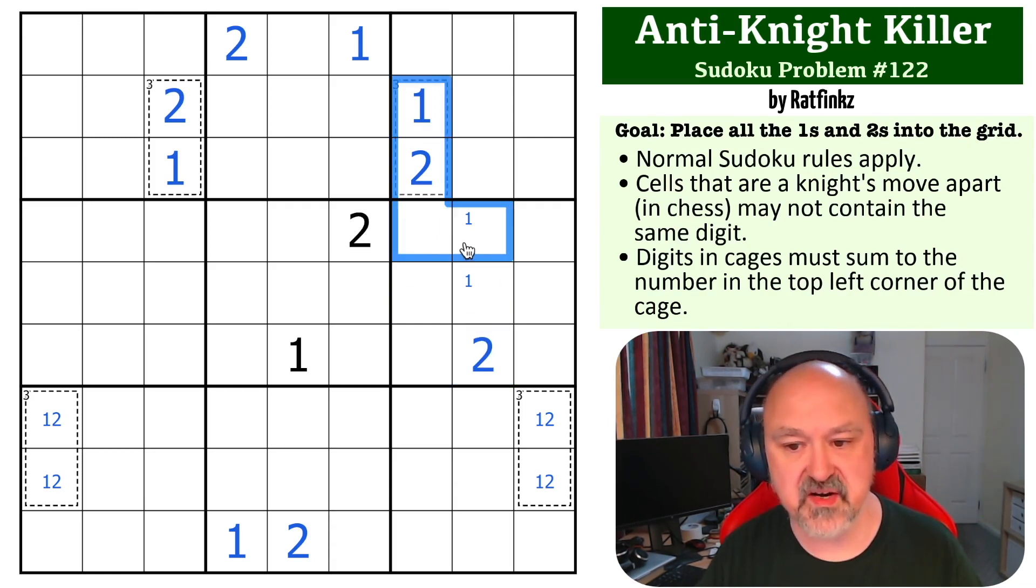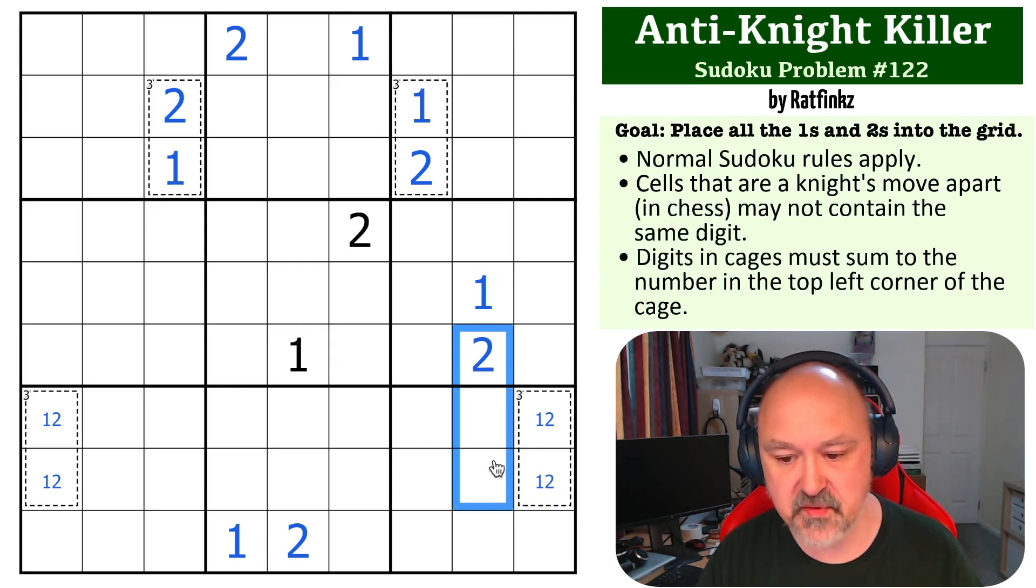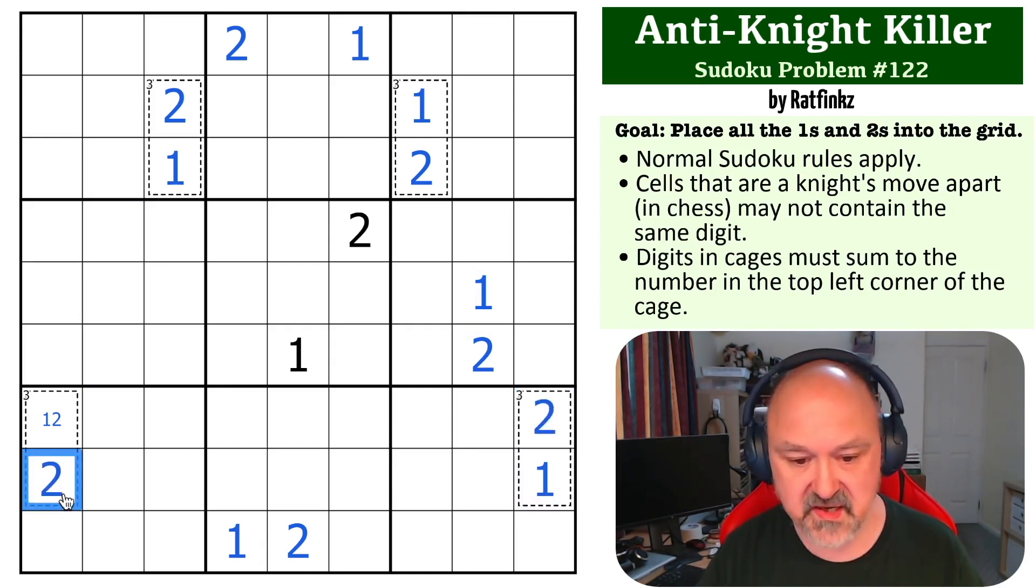Now this moves down here. This two sees that one by the knight's move shape, and we could have done the same over here, but this two sees this two by the knight's move shape, so this is the one, this is the two. That looks across, making this the two and this the one. And now by basic Sudoku, or if we had done here instead of here we could have done the same in reverse, by Sudoku that is the one and that is the two. And that is the solution to the problem.